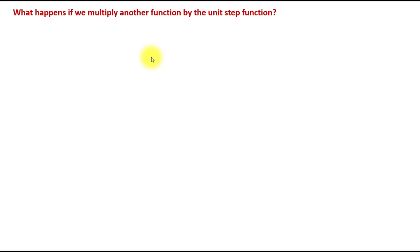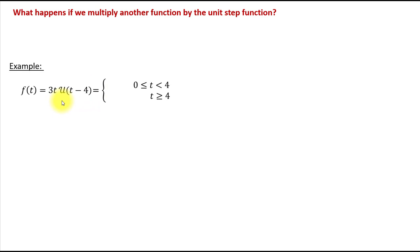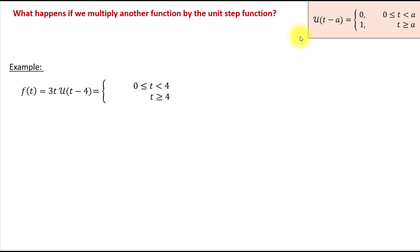What happens if we multiply another function by the unit step function? Let's consider a simple example: the unit step function at 4 being multiplied by the linear function 3t. Since the unit step function is a piecewise defined function, this product will also be piecewise defined. Using the definition, the unit step function equals 0 for all values of t between 0 and 4, and since 0 times anything is 0, this product equals 0 for all values of t from 0 to 4.